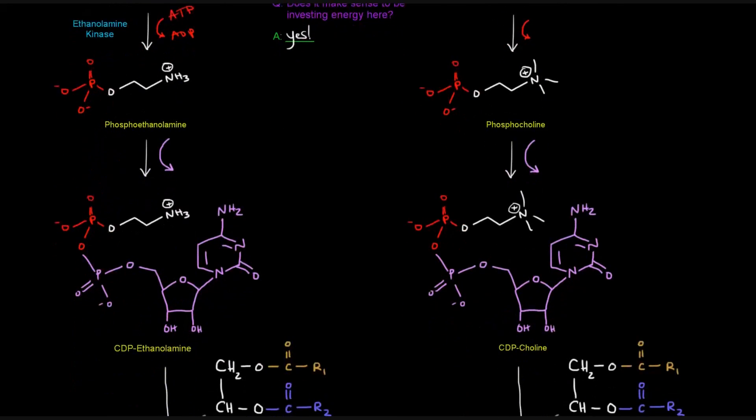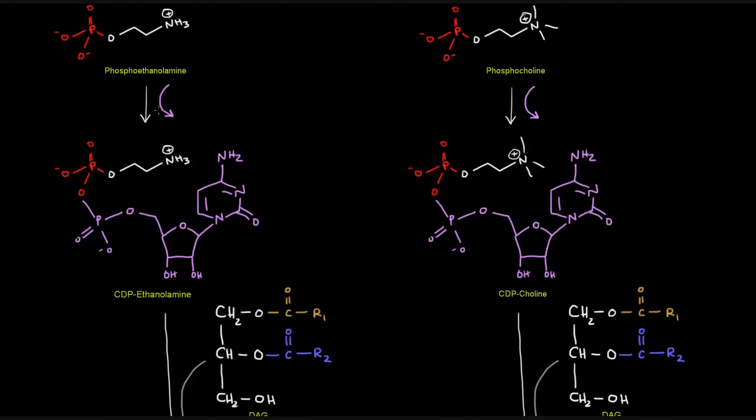Now, when we have phosphoethanolamine, we're going to turn that into CDP-ethanolamine. So, in order to do that, we have to invest a CTP, which has three phosphates, and we're really only attaching this purple portion, which only has one phosphate, so we're adding a CMP, essentially. The other two phosphates must be gone as a pyrophosphate. The enzyme that accomplishes this is CTP-ethanolamine-cytidyltransferase. Let's kind of break down that name a little bit.